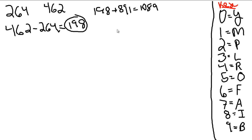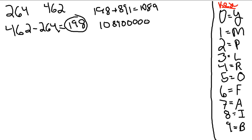Now times that by a billion — I mean a million, excuse me. So you're going to get a very large number here, basically just adding six zeros. There's three, four, five, six. There is our very big number.